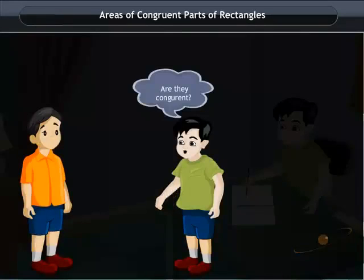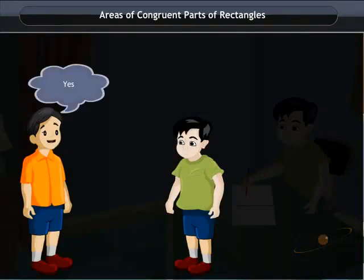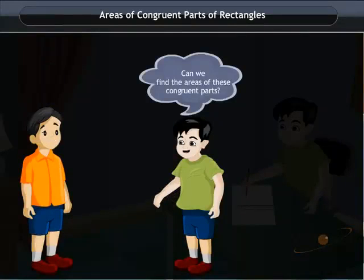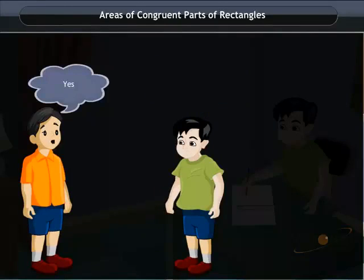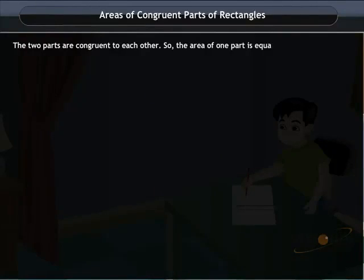Are they congruent? Yes. Can we find the areas of these congruent parts? Yes. Let me explain. The two parts are congruent to each other, so the area of one part is equal to the area of the other part.